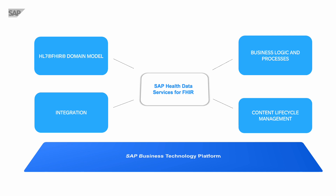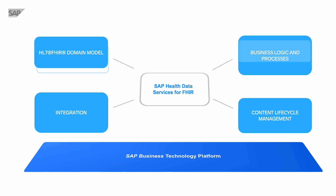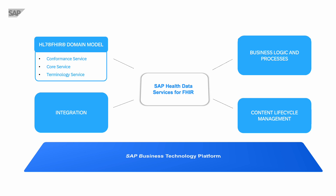Let's highlight some of the key capabilities of SAP Health Data Services for FHIR. The service provides all major capabilities defined by the FHIR specification, including the support of all resource types. In addition to that, it allows you to define custom resource types behaving exactly like the standard ones.